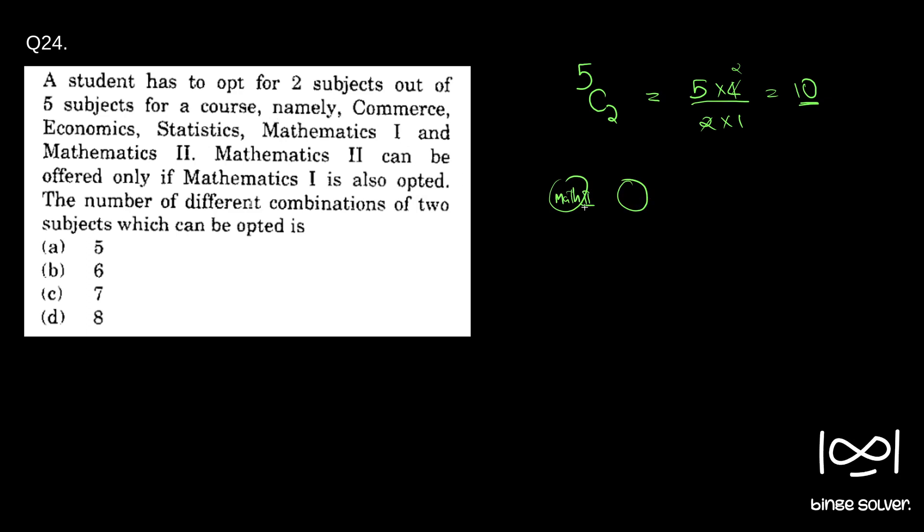We've included Math 2 with Commerce, Economics, and Statistics—that's three invalid combinations. If you're not including Math 1, the only valid combination with Math 2 is Math 1 and Math 2. So Math 2 with the other three subjects are invalid. We subtract these 3 from 10 to get 7. Option C is the correct answer.